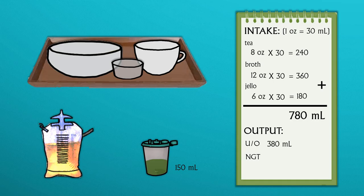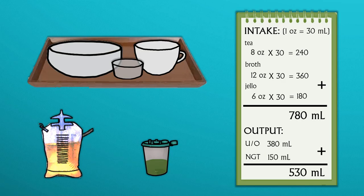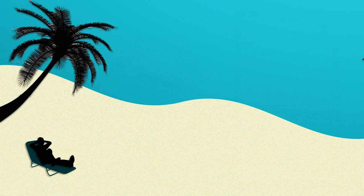Add your total output of 380 milliliters of urine and 150 milliliters from the NG tube canister, so you should have a total output of 530 milliliters from your shift.